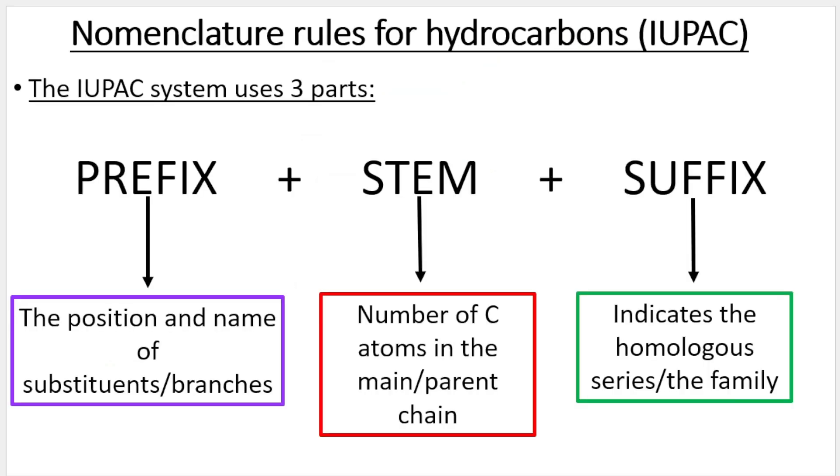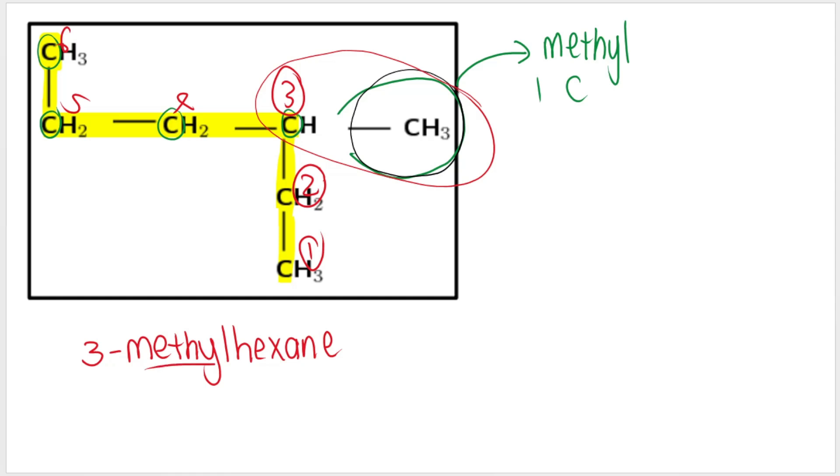Remember when we name, the end of the name is always the homologous series or the family. So it ends in ane. Then in the middle is the number of carbon atoms in the main chain. So we had hex. And then in front of that, the prefix, what comes in front are the branches, the substituents. In this case, it was a methyl group. Remember, this part is one word. And over here, we are indicating that the methyl group is on carbon three. Numbers and letters are always separated by a dash or a hyphen like that.